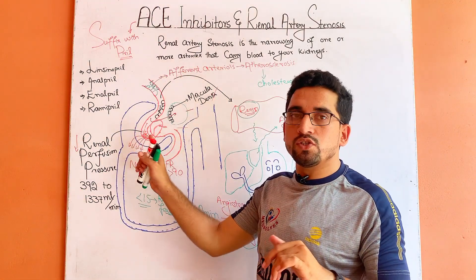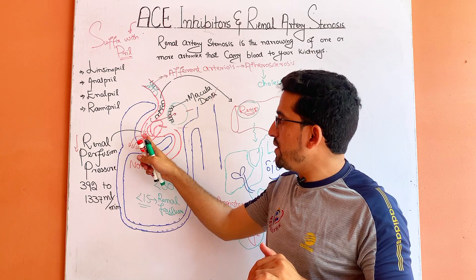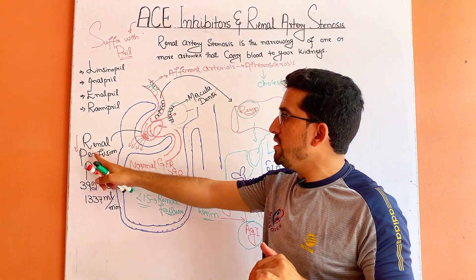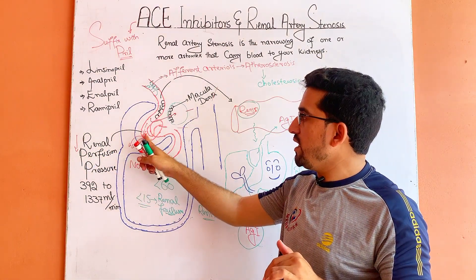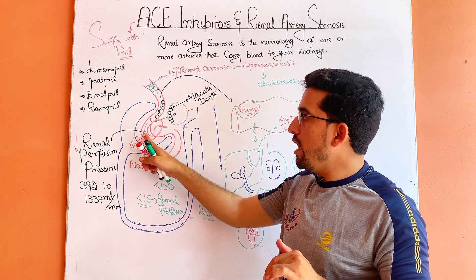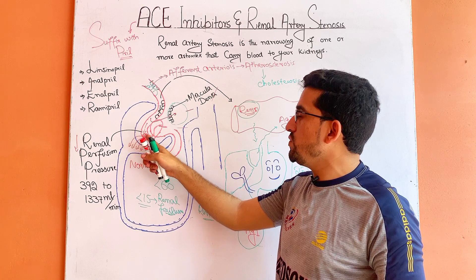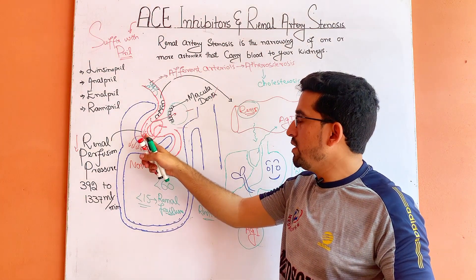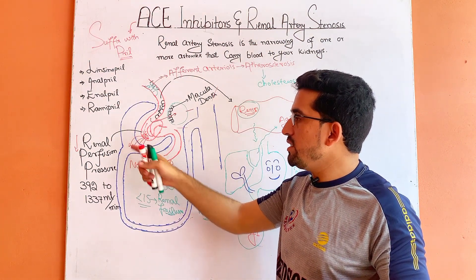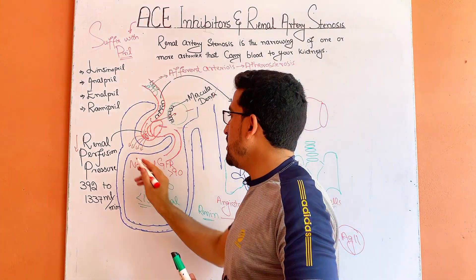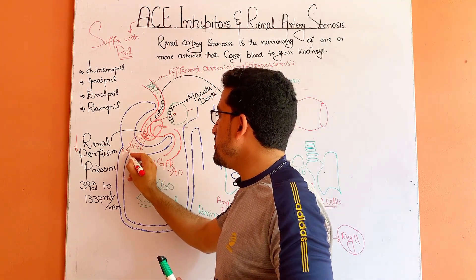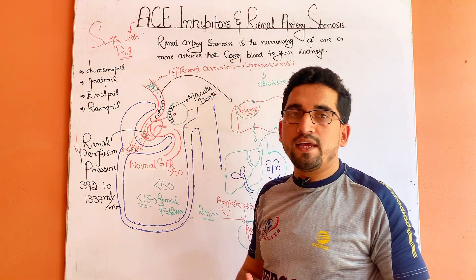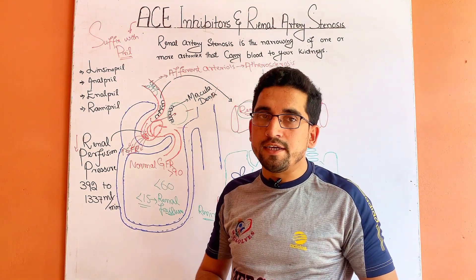Angiotensin 2 is the main agent that acts on the efferent arterioles to maintain blood pressure in the glomerulus apparatus, in spite of the decrease in renal perfusion rate. The constriction of the efferent arterioles increases resistance to blood flow, which increases pressure, and as a result the GFR is also increased. This is how the GFR is maintained and the kidney performs its functions correctly.